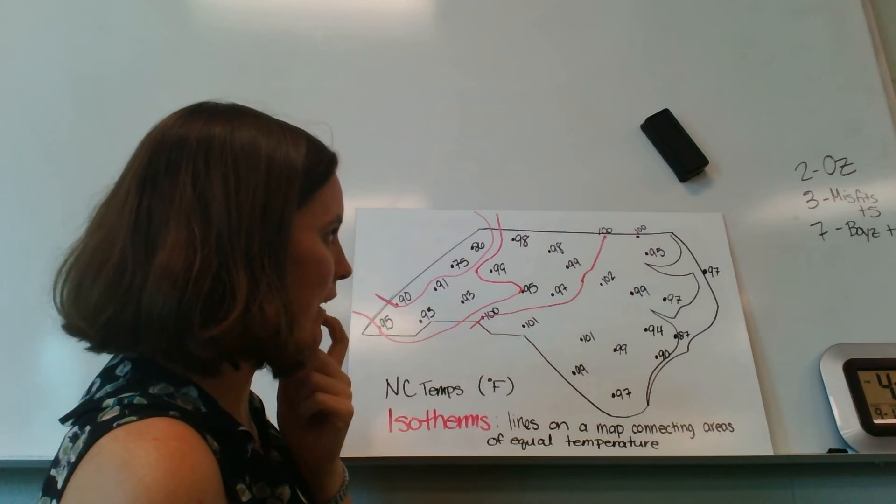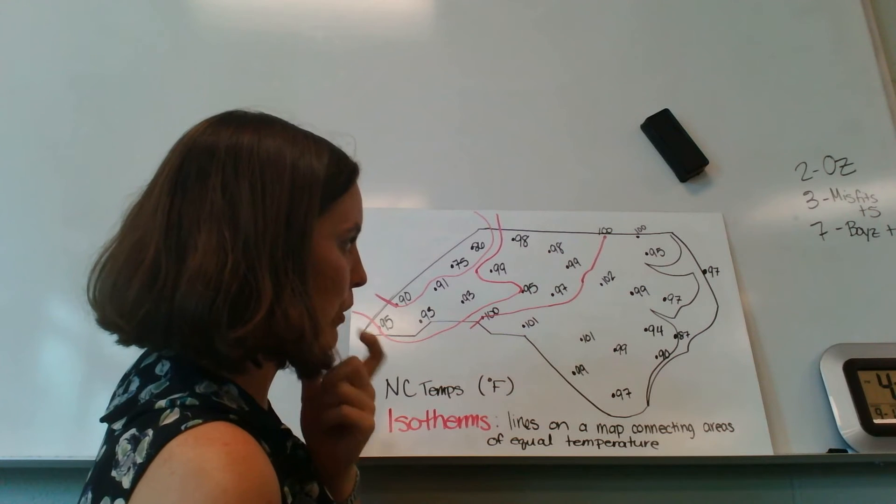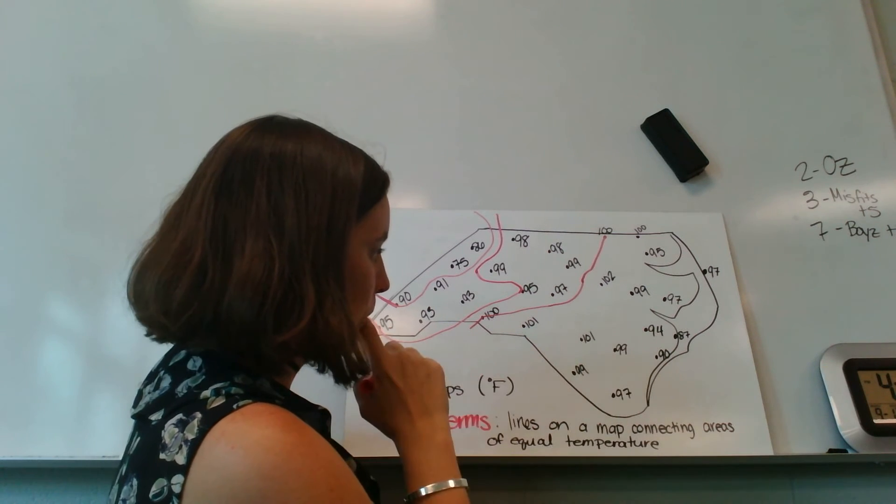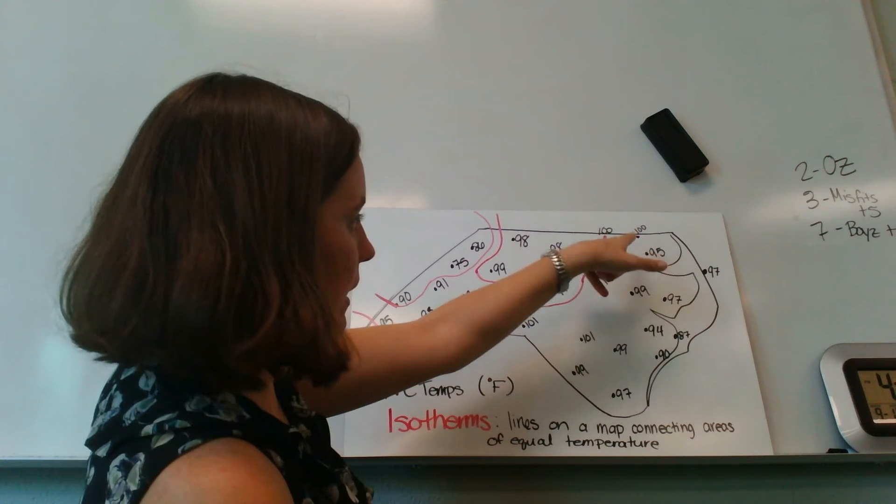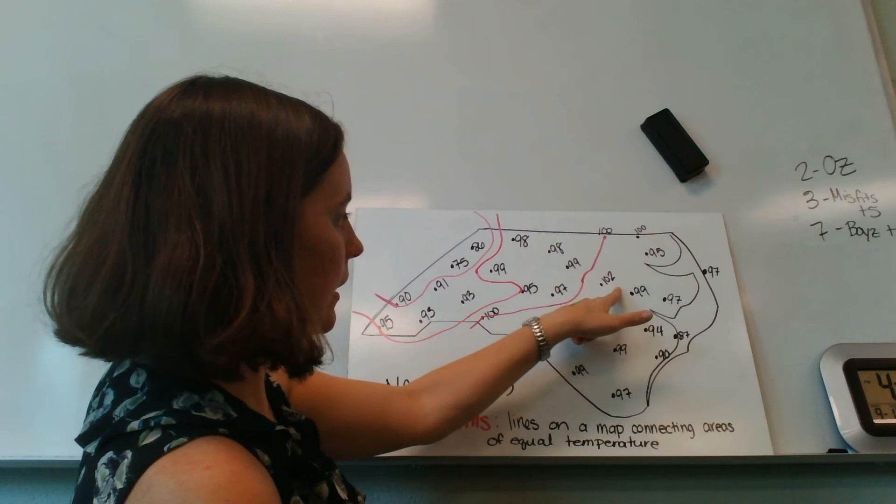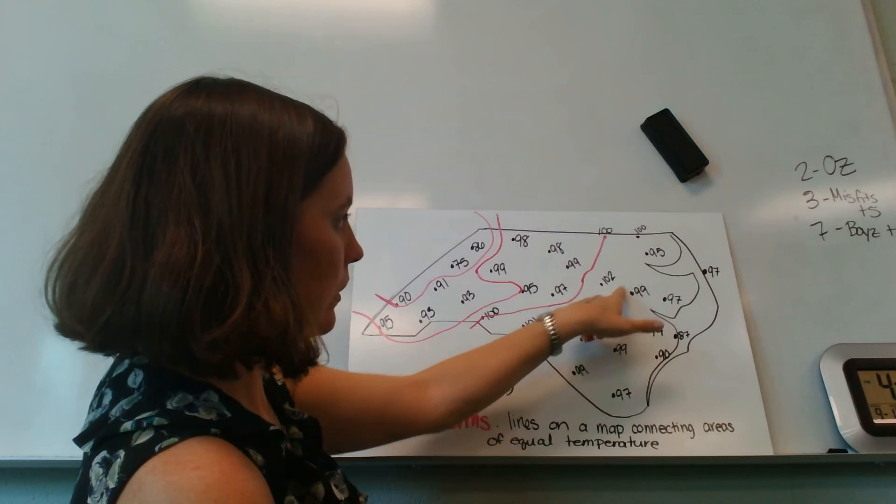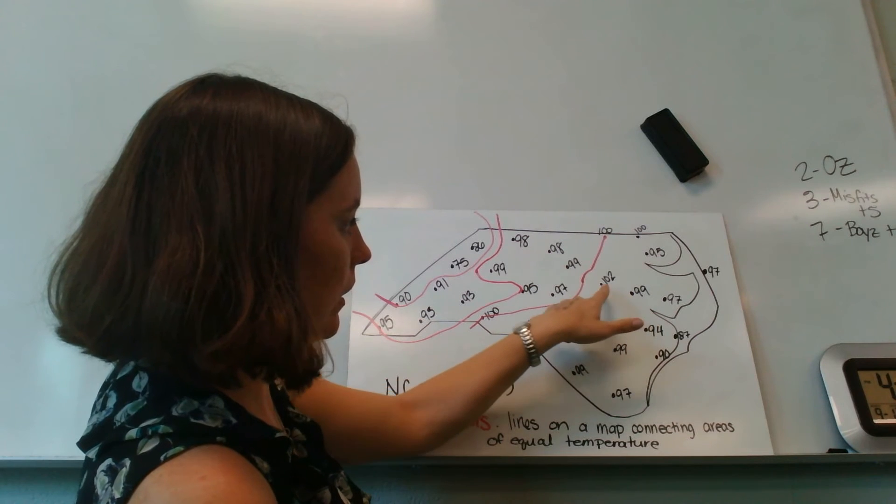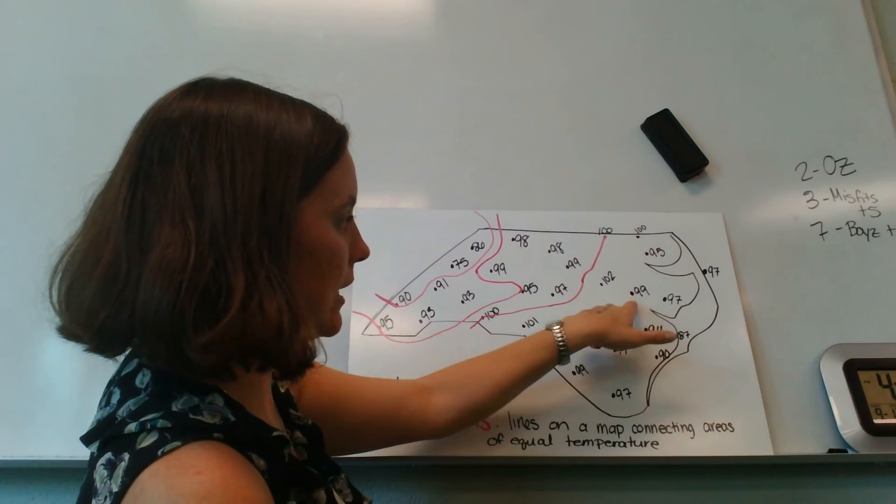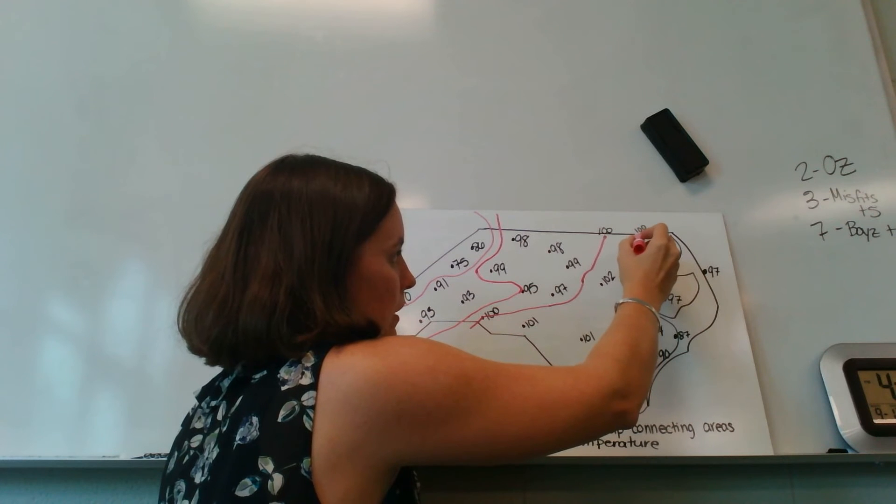And then I think I might have another 100 degree isotherm. If I go, yep. So it looks like if I start here and I start going south, that if I go between 102 and 99, 100 is definitely in between there. And I keep going south.